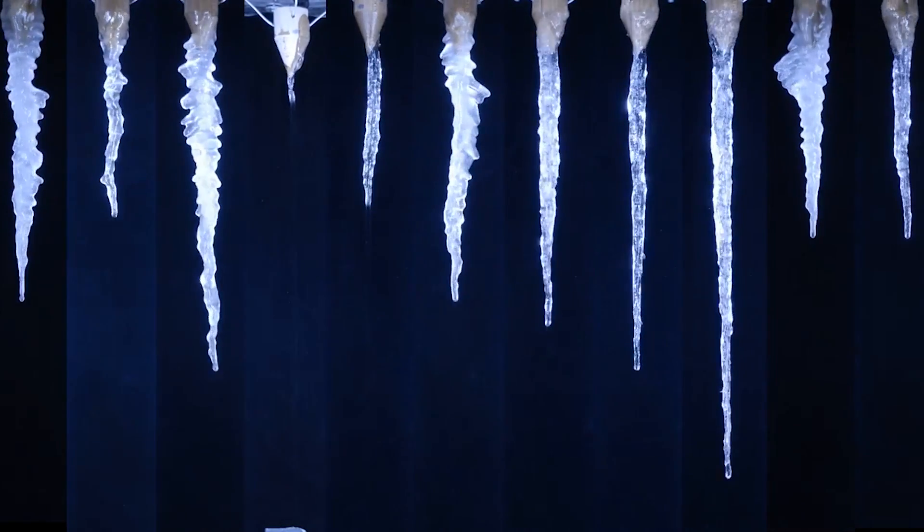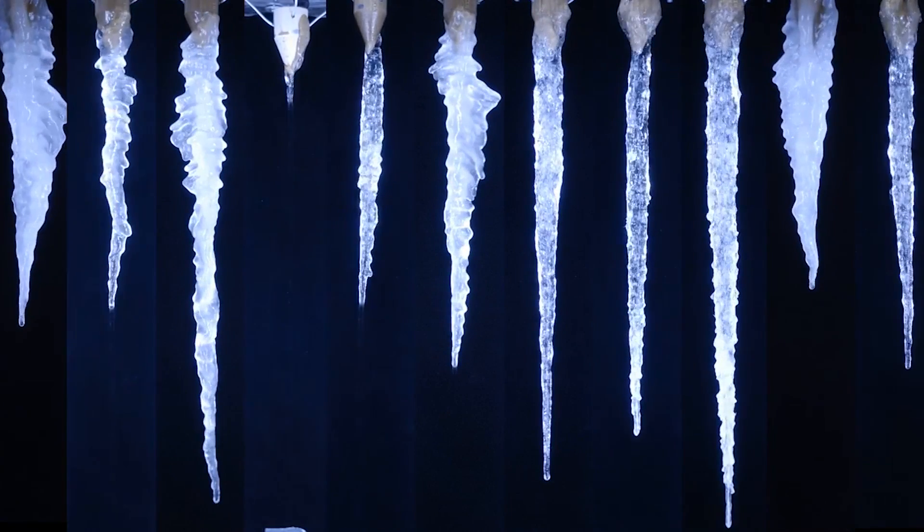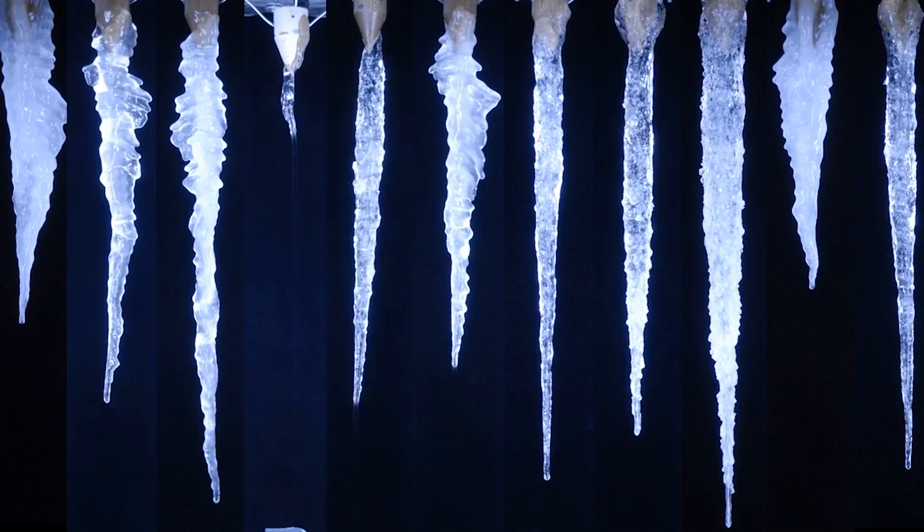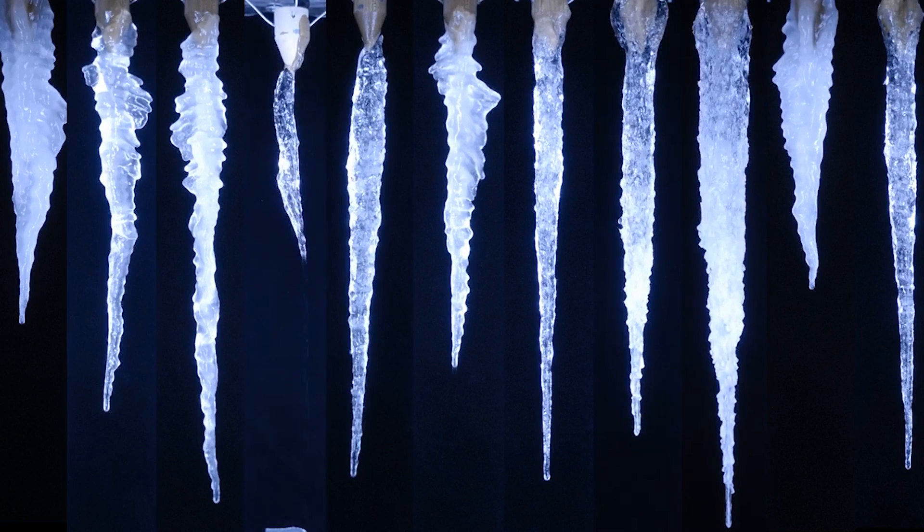Icicles grow from flowing supercooled water and the water flows over the evolving shape and tells the shape how to grow. The shape of an icicle is really a puzzle because the way the water flows determines the shape but the shape determines the way the water flows. So it's a kind of chicken and egg problem.